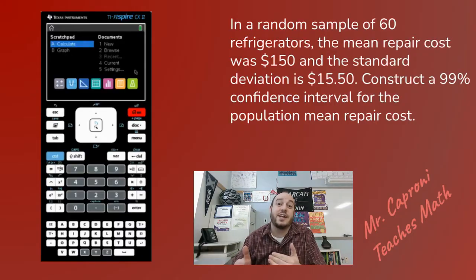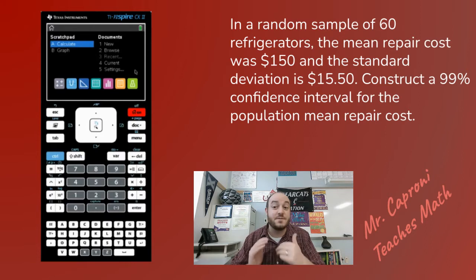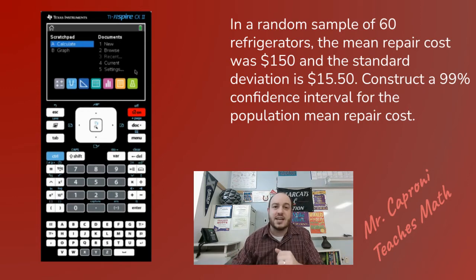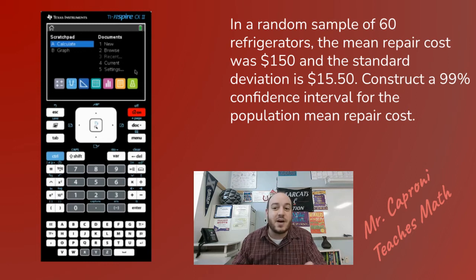For today we're going to be looking at this question: In a random sample of 60 refrigerators, the mean repair cost was $150 and the standard deviation is $15.50. Construct a 99% confidence interval for the population mean repair cost. We know this calls for the population mean with the sample standard deviation because it does not state the population standard deviation.